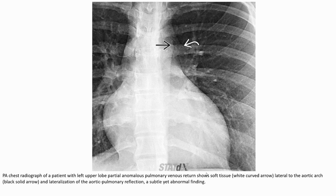In the right atrium and left upper lobe PAPVR, soft tissue is seen lateral to the aortic edge, with lateralization of the aortopulmonary window — a subtle yet abnormal finding.